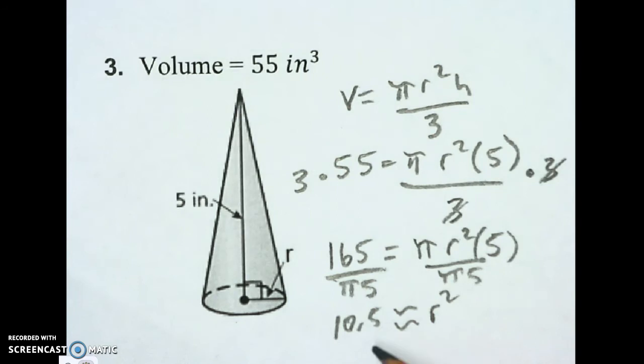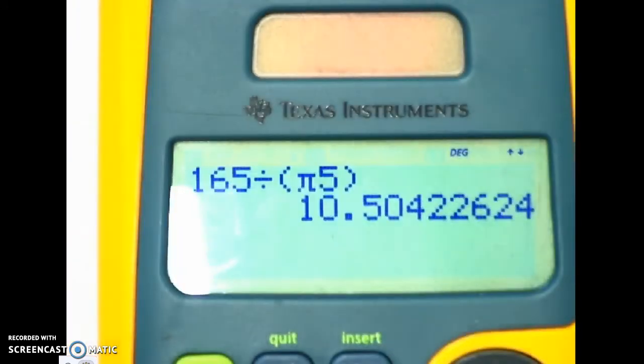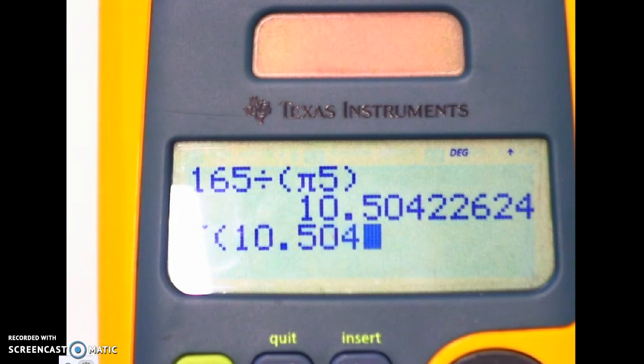And here's why I left that on my screen. So when I take the square root of this, I can still see what to do. So I'm going to take the square root to get R because we have R squared. So 10.504226. It's nice to type a bunch of numbers in so you get an exact square root.